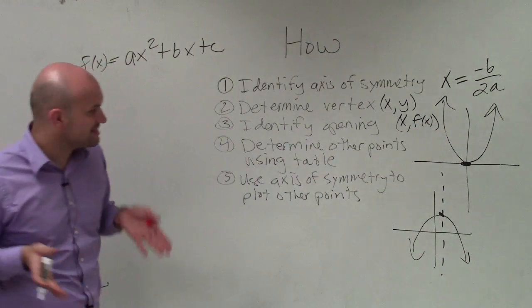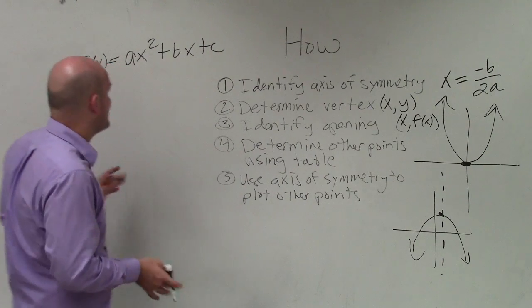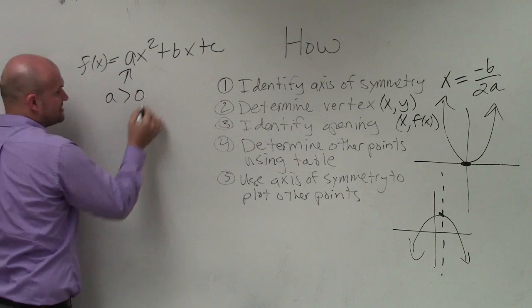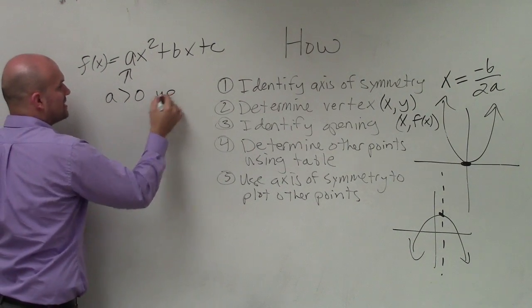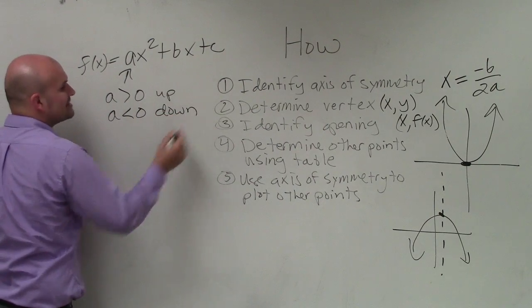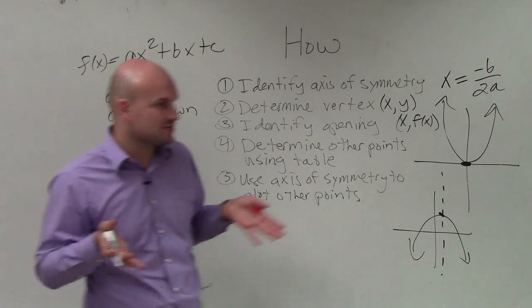Now, the next thing we need to do is identify the opening. And we identify the opening by looking at a. If a > 0, then our graph opens up. If a < 0, then our graph opens down. And that's very important, especially when we're graphing.